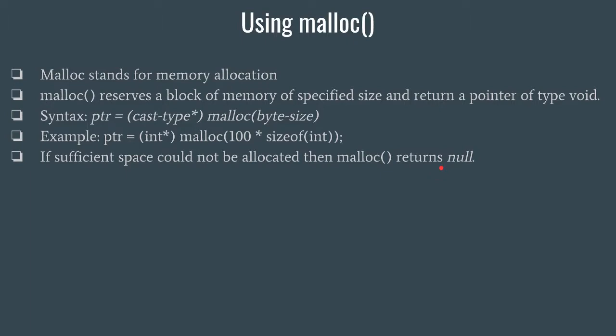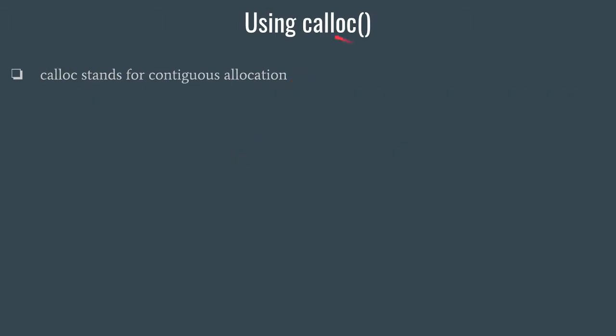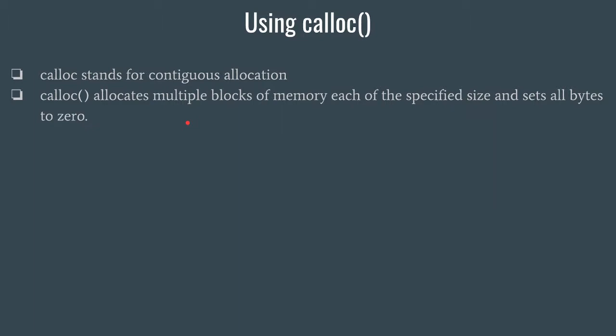We must check for NULL every time, because during dynamic memory allocation it may happen that the heap memory is full or no longer available. In that case, sufficient space cannot be allocated, and malloc returns NULL to the pointer. Now we have calloc. Calloc stands for contiguous allocation. Calloc allocates multiple blocks of memory, each of a specified size, and sets all bytes to zero — this is a very important difference between calloc and malloc.